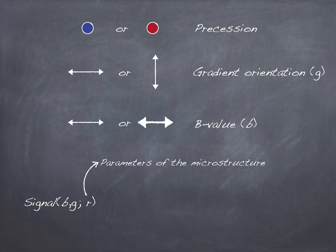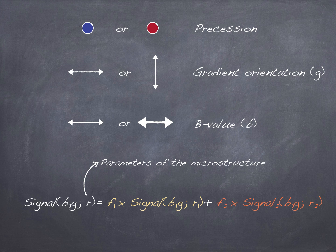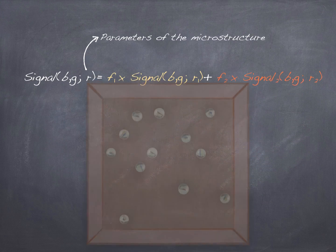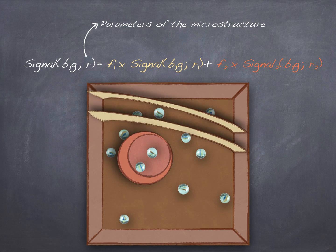This is called the superposition property. If I have two compartments of water molecules and I know a model for each of them, then when both compartments are present together in a voxel, the signal that arises from both is the sum of the individual signals, weighted by fractions f1 and f2. Those fractions represent the number of water molecules in each compartment. For instance, one compartment could represent a cup shape and another a yellow strip. This makes things easier because all we need is a model for each building block of the microstructure, not for every possible combination.